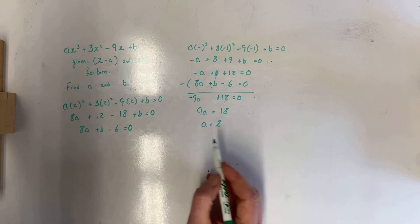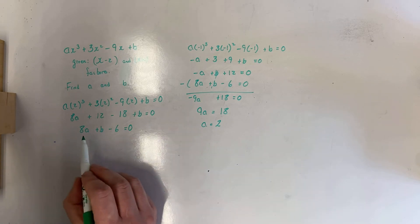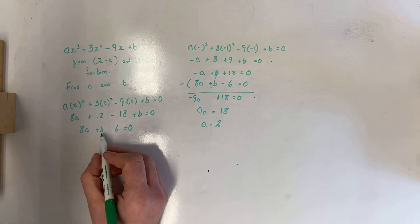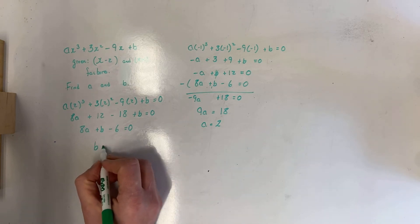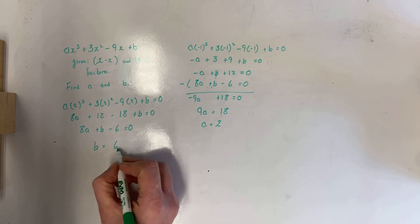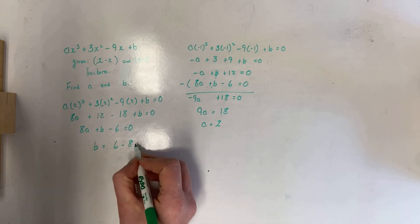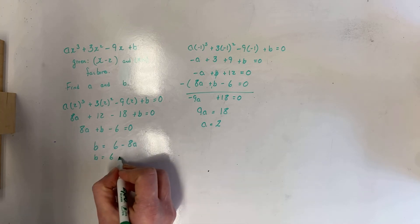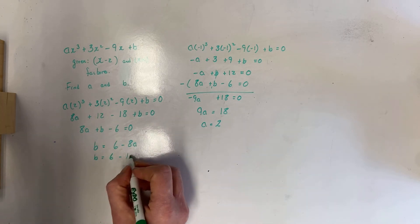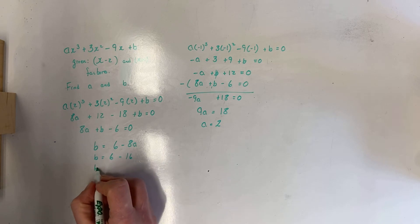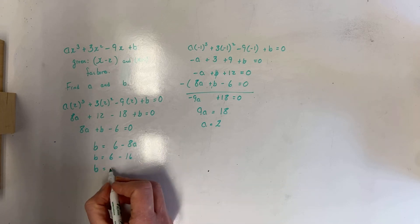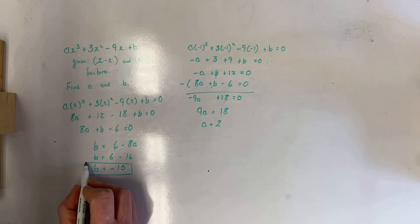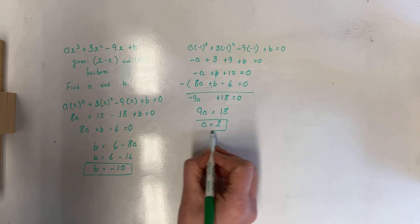Now I'm going to solve for b by substituting a = 2 back in. Rearranging the first equation: b = 6 - 8a. With a = 2, b = 6 - 8 times 2 = 6 - 16 = -10. So my value for b is -10, and my value for a is 2.